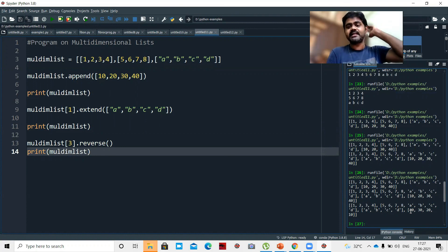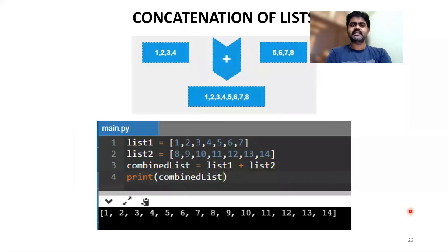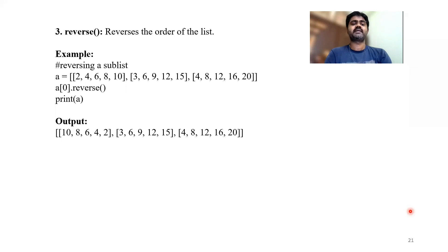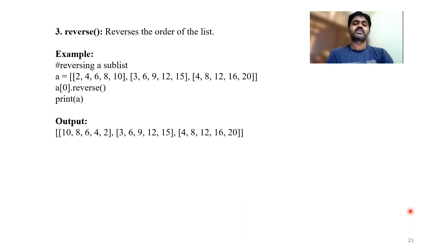In the next class we'll discuss concatenation of a list and the methods present in it. This session covered multi-dimensional lists: how to create them, how to access elements using three methods, and the append, extend, and reverse methods. If you're watching my channel for the first time, please subscribe, share my videos with your friends and well-wishers, and support the channel. Thank you and have a wonderful day.